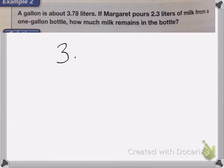So again we'll line up our numbers with the decimal place, 3.78 and 2.3, and we're going to be subtracting.